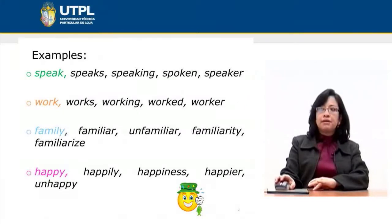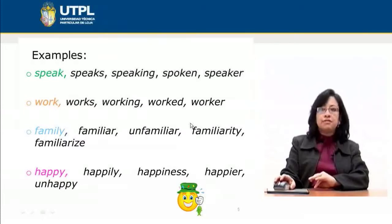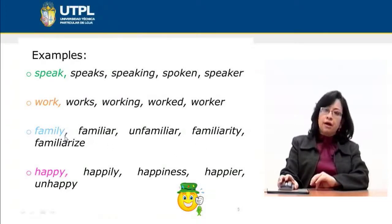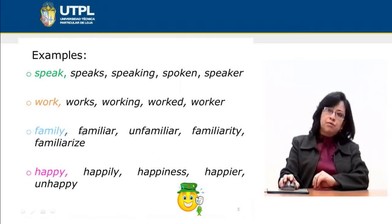These related forms help the writer gain cohesion in his or her paragraph. We also have: work, works, working, worked, worker. And then: family, familiar, unfamiliar, familiarity, familiarize — we have a noun, adjectives, a verb, and even the antonym 'unfamiliar.' These can all be combined depending on the idea we want to express.